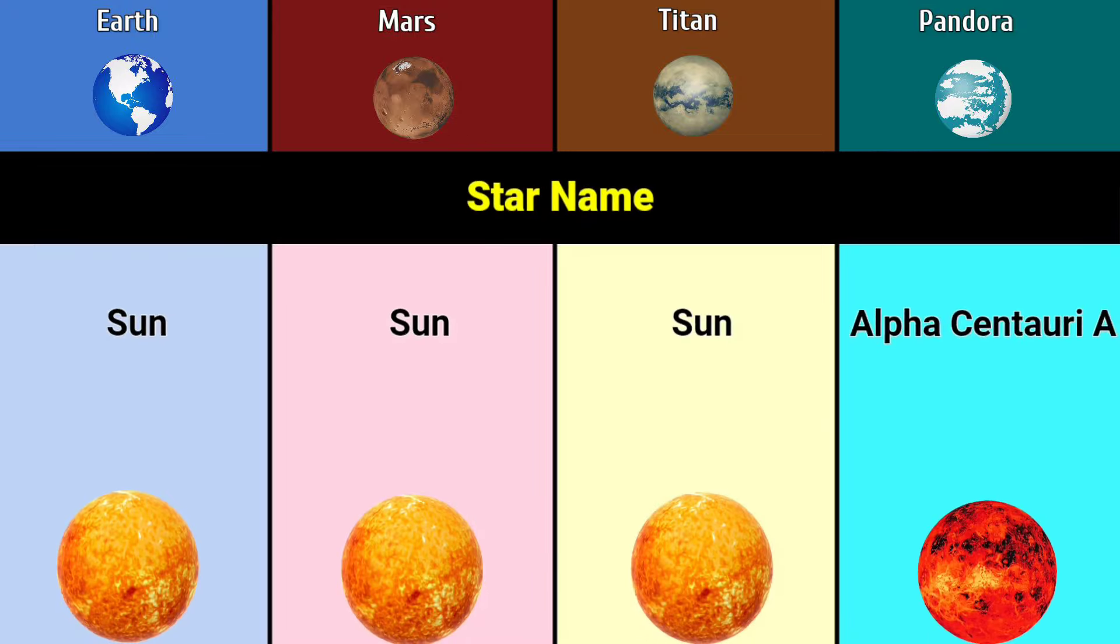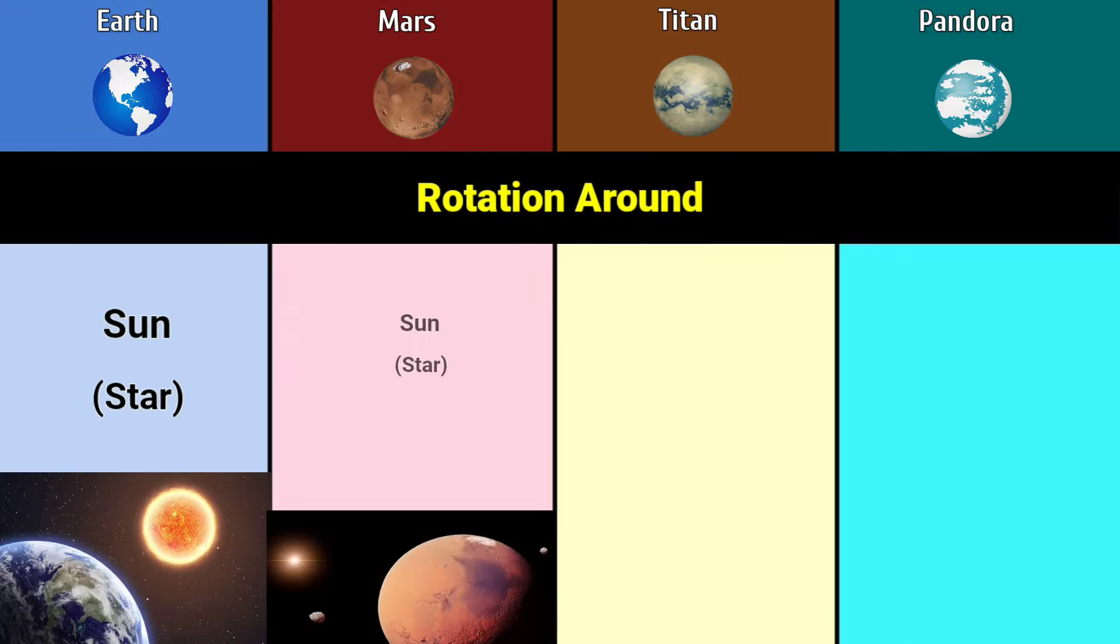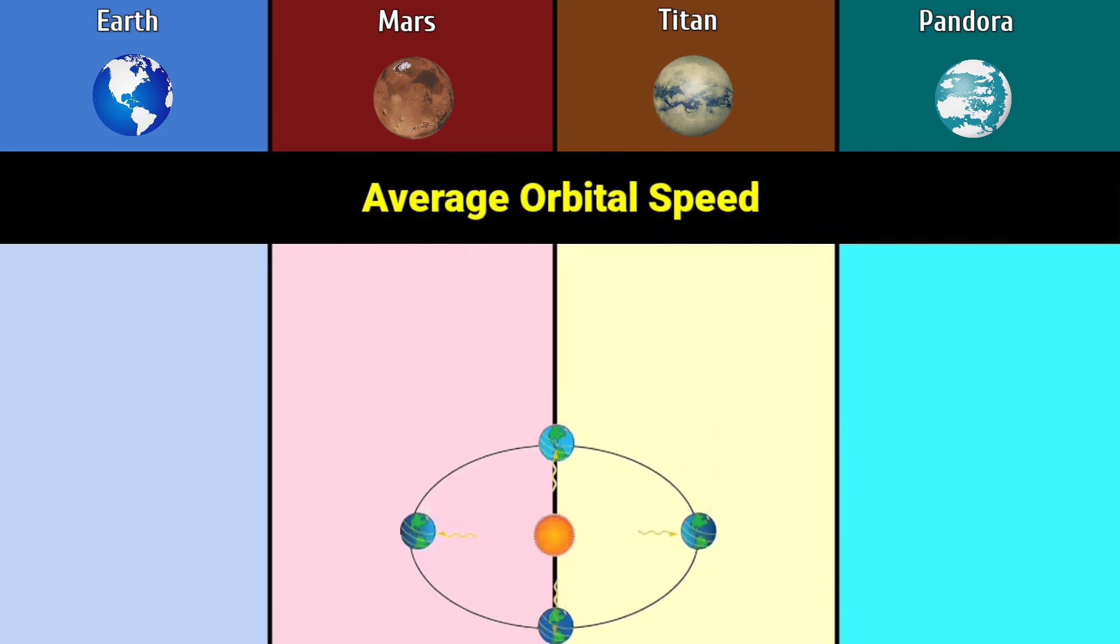Rotation around: Sun, Sun, Saturn, Polyphemus. Average orbital speed: 29.78 kilometers per second, 24.07 kilometers per second, 5.57 kilometers per second, 12.3 kilometers per second.